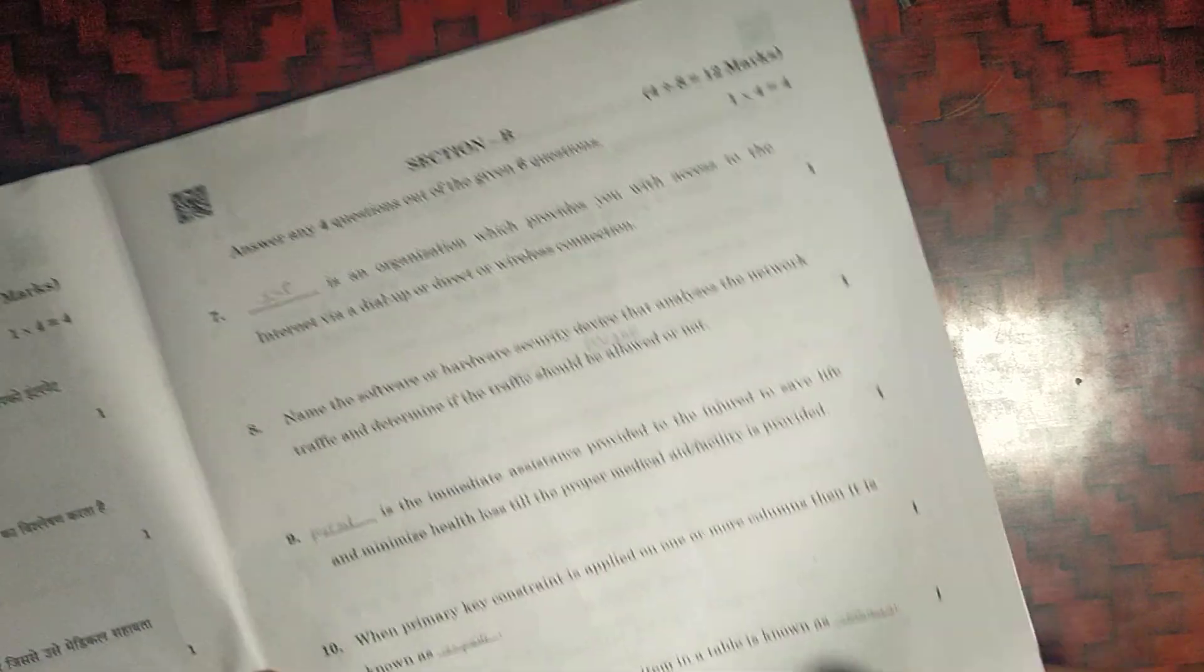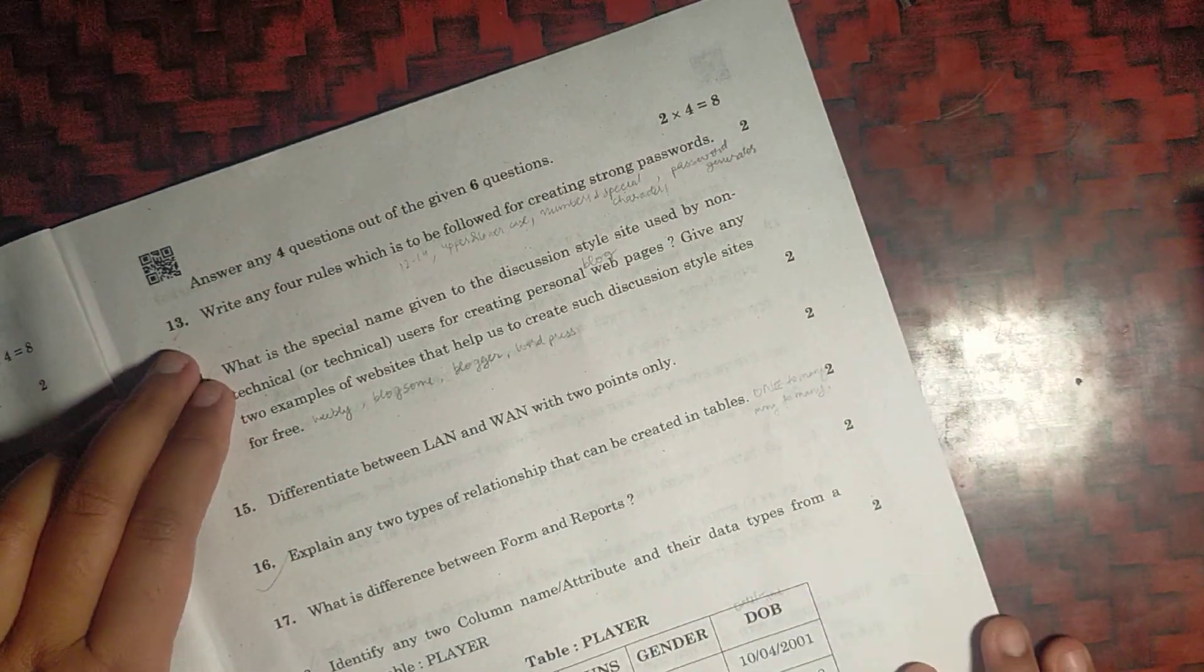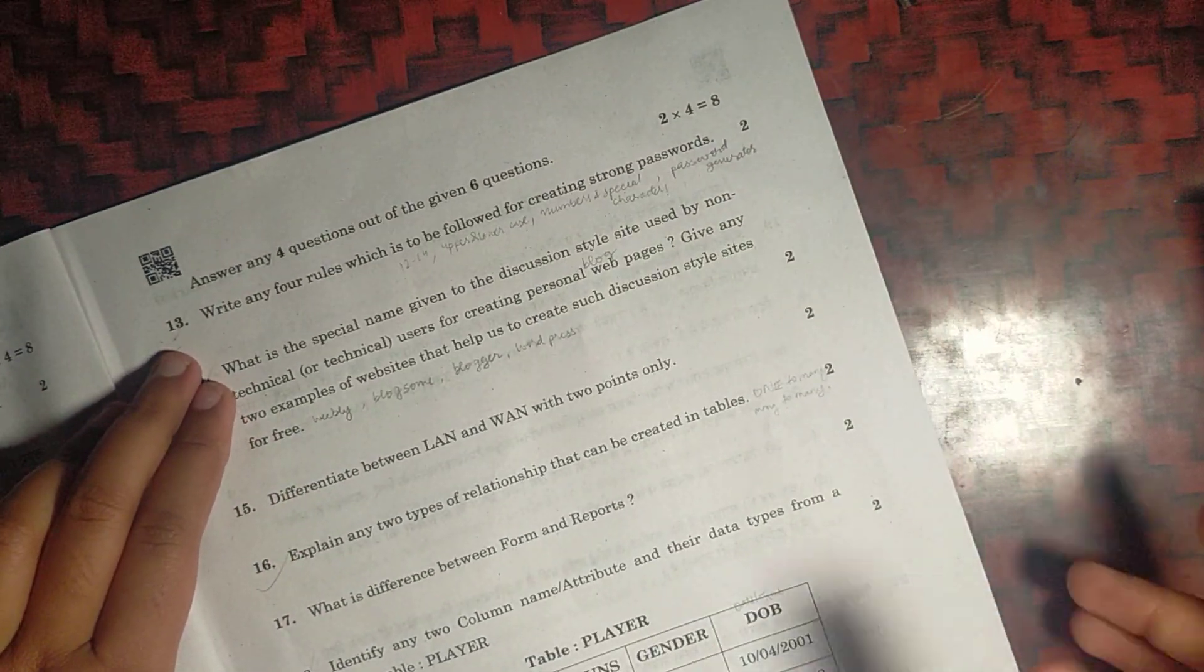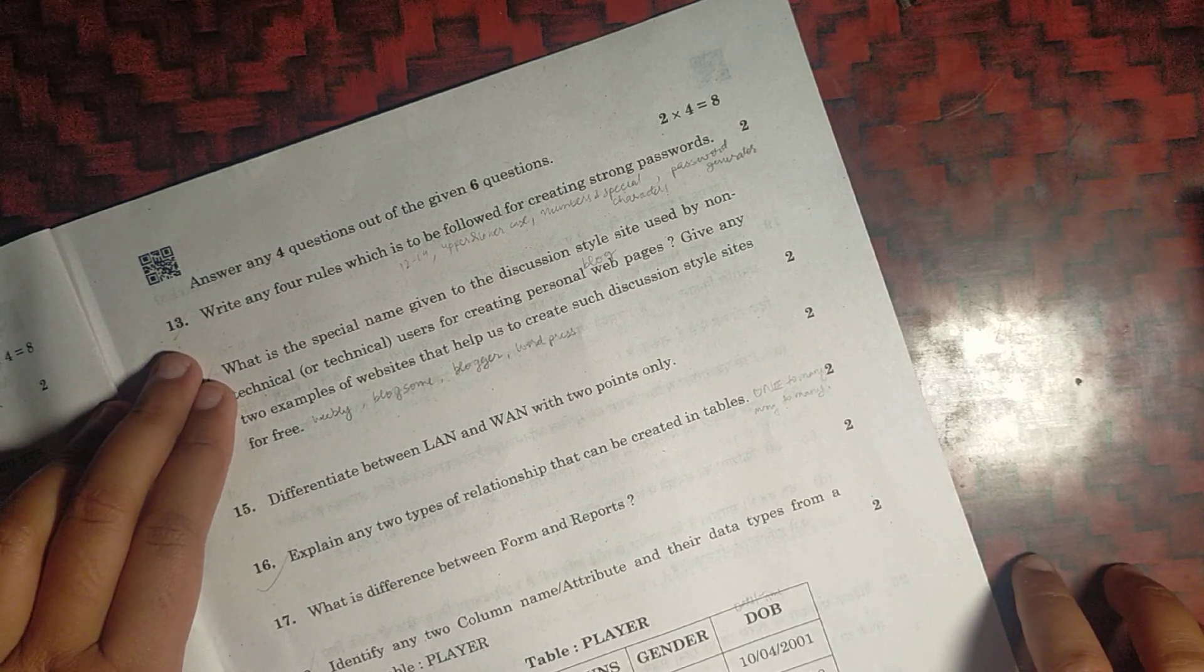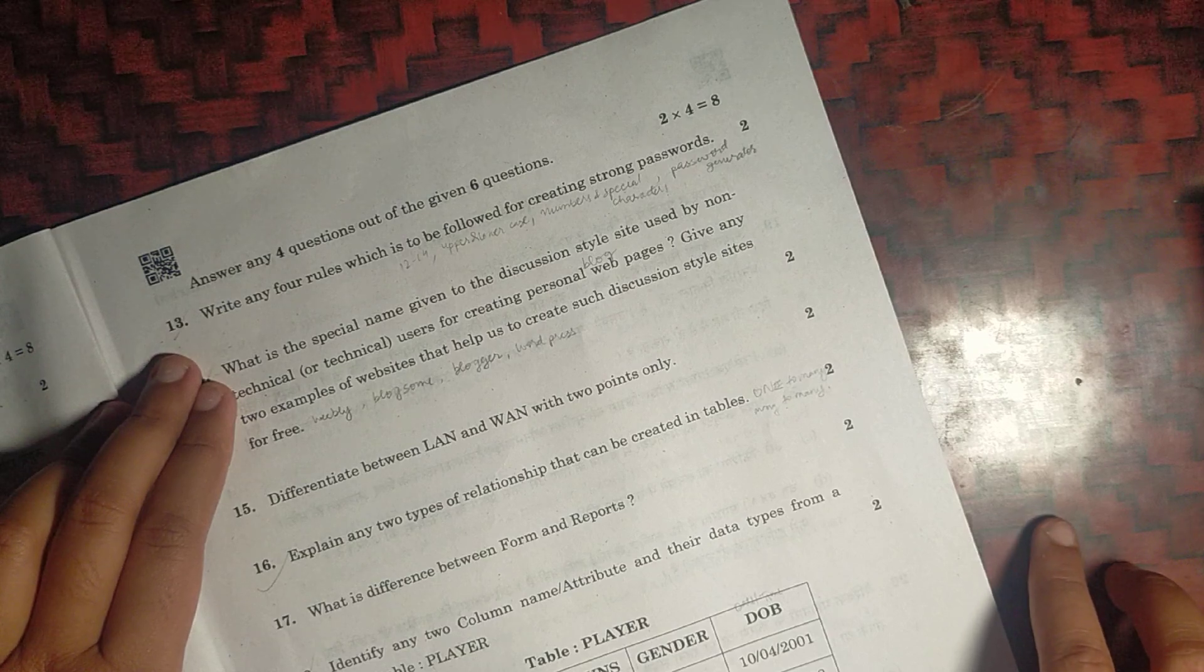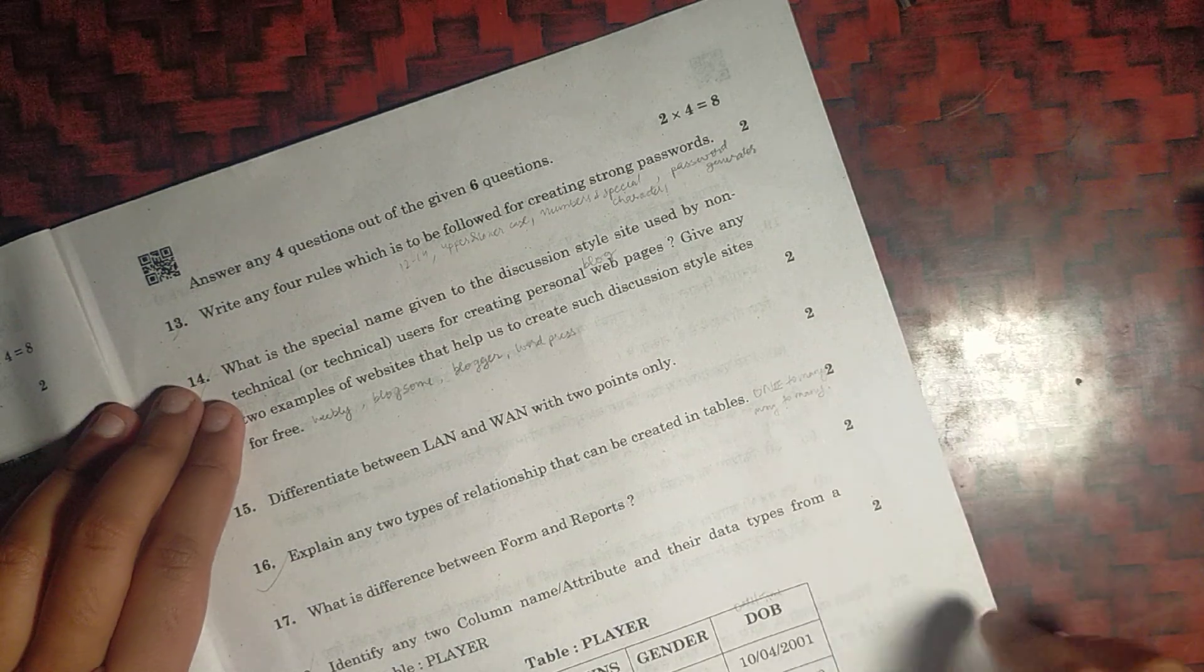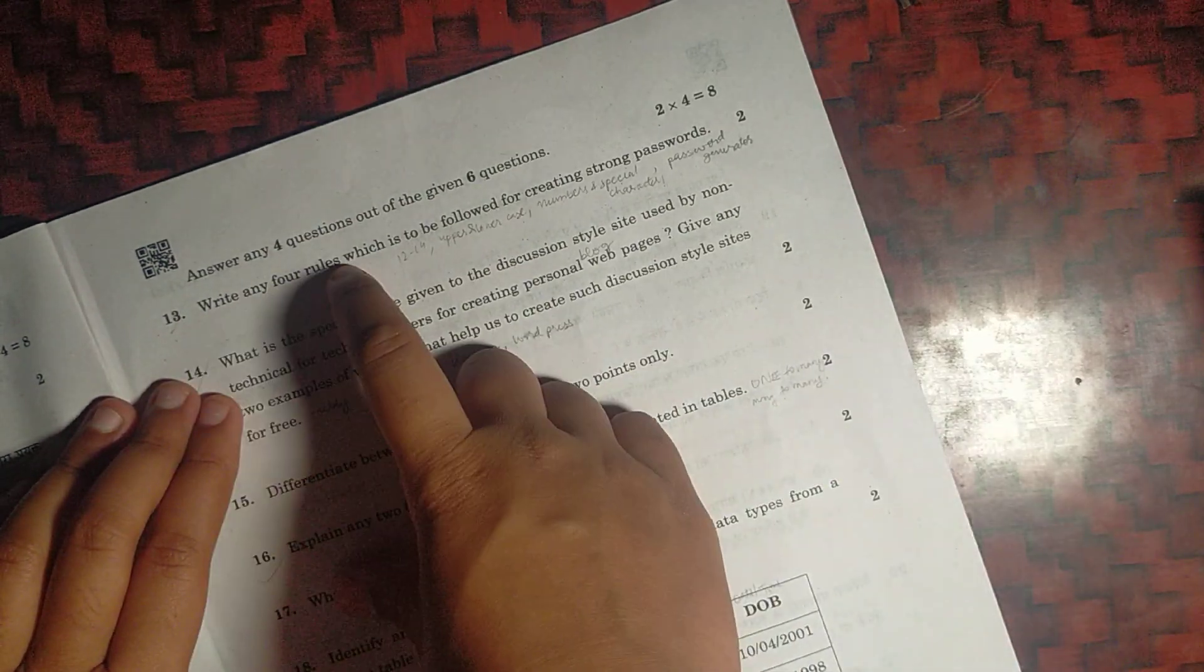Twelfth would be sorting needs, arranging the data in ascending or descending order. Four rules, you can write any four, like the password should be 12 to 14 digits. It should contain uppercase and lowercase letters. Numbers and special characters should be included if permitted. And password generator can be used, and not using the same password for multiple sites. You can write any four rules.